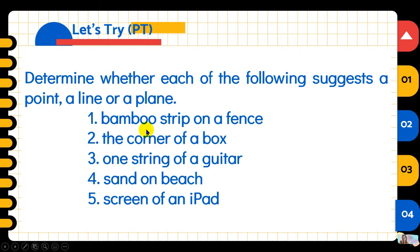So, bamboo strip of a fence. That is a line. Next, the corner of a box. Again, when we say corner, the very edge. So this is a point. One string of a guitar. We mentioned this earlier. String of a guitar. String is a line. Sand on a beach. There's a lot of it, but they're very small, right? That is a point. Screen of an iPad. Screen. From the word itself. This is a pictorial representation of a plane.